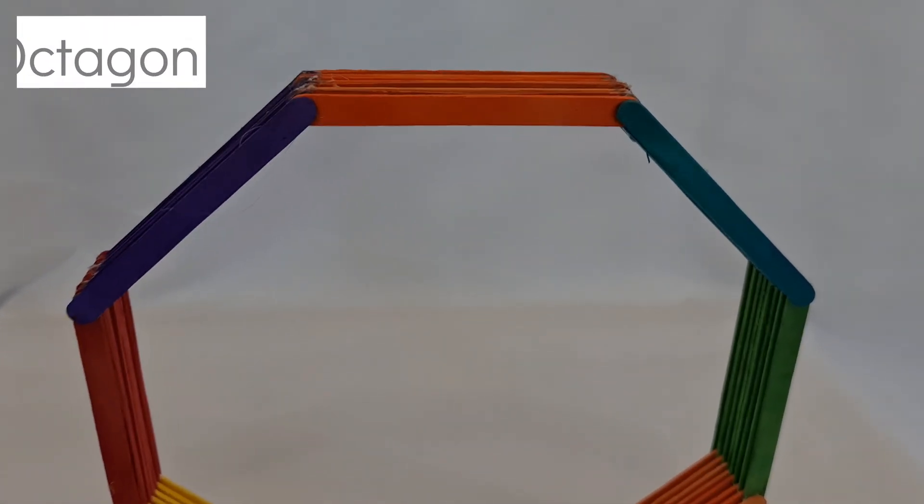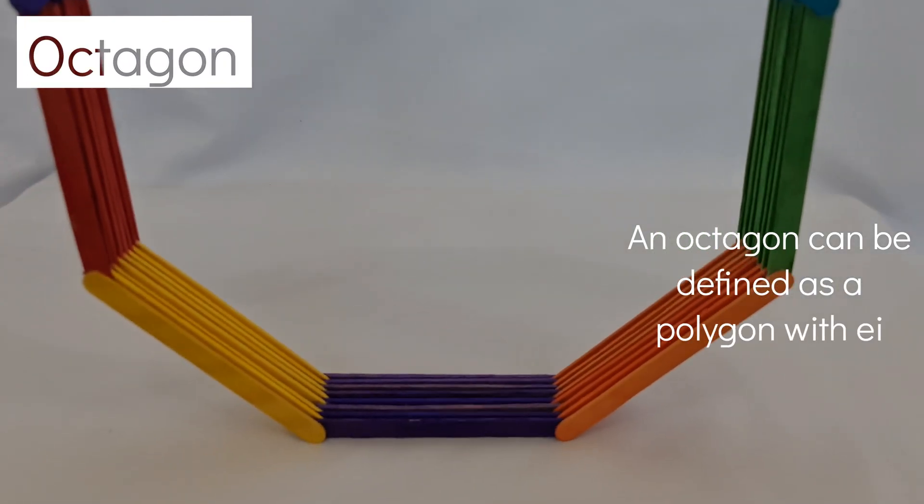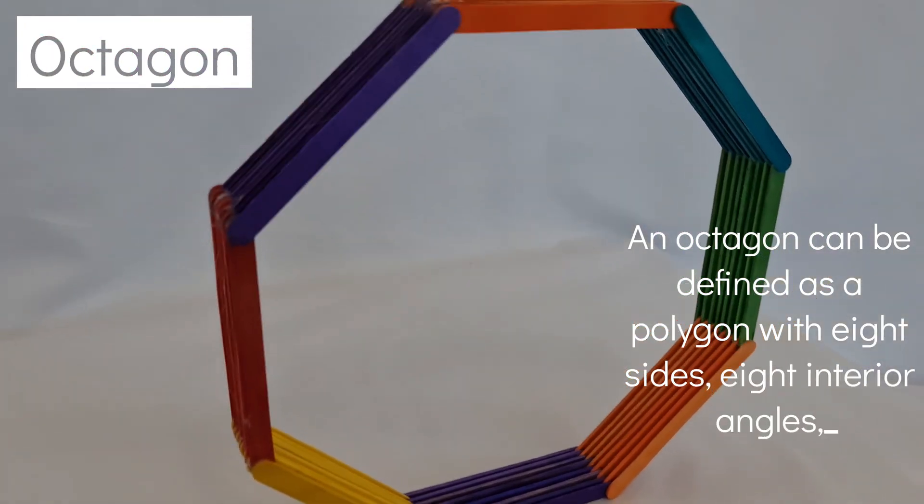Octagon. An octagon can be defined as a polygon with eight sides, eight interior angles, and eight vertices.